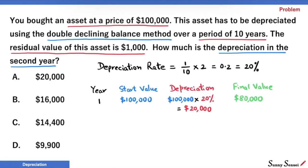This is also the value at the start of year 2. Depreciation in year 2 will be 20% of $80,000. That is $16,000. This is our number. B is the correct choice.